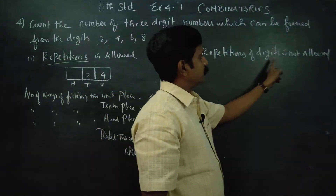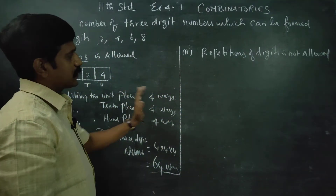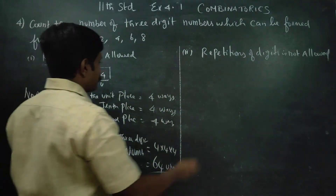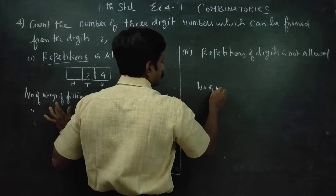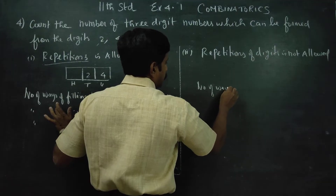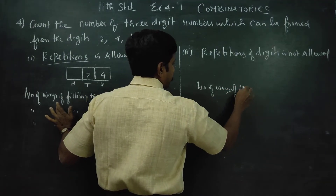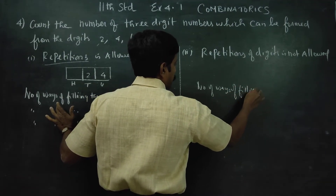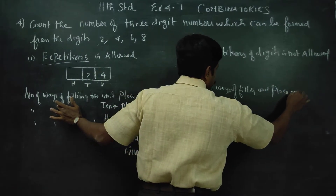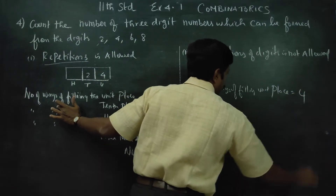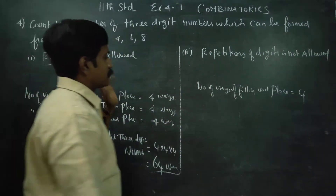Now, repetition of digits is not allowed. The number of ways of filling the units place — you still have 4 choices: 4 ways.